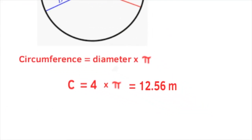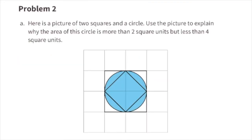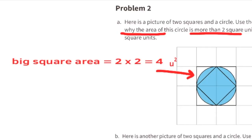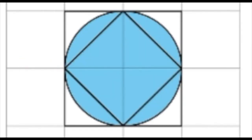Problem number two, part a: here is a picture of two squares and a circle. Use the picture to explain why the area of this circle is more than two square units but less than four square units. The area of the bigger outside square is two units by two units, which is four units squared, so we know the area of the circle has to be less than four units squared.